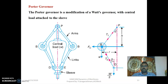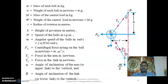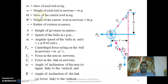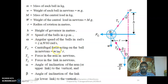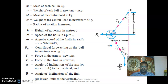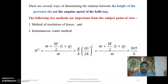For the Porter governor, you have to use the central load on the sleeve position. This is the main difference between the Watt governor and the Porter governor; all other conditions remain the same. In the Porter governor, if a central load acts upon the sleeve, the important notations are: small m for mass of the balls, capital M for mass of the central load in kg, omega for angular speed in radians per second, and alpha and beta for the angular inclination of the arms in the vertical position.